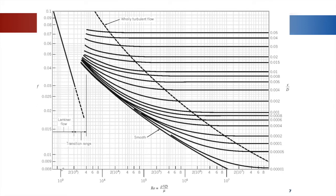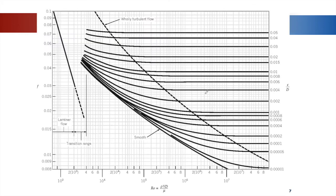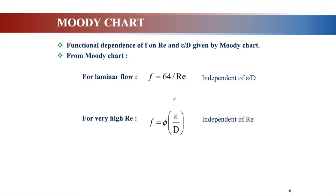For laminar flow, only Reynolds number affects the friction factor value. You may either refer to Moody's chart or use the equation F equals 64 over Re directly — just find the Reynolds number and substitute. For very high Reynolds numbers — for example 10 to the power of 5 — the Reynolds number does not contribute to the friction factor value.